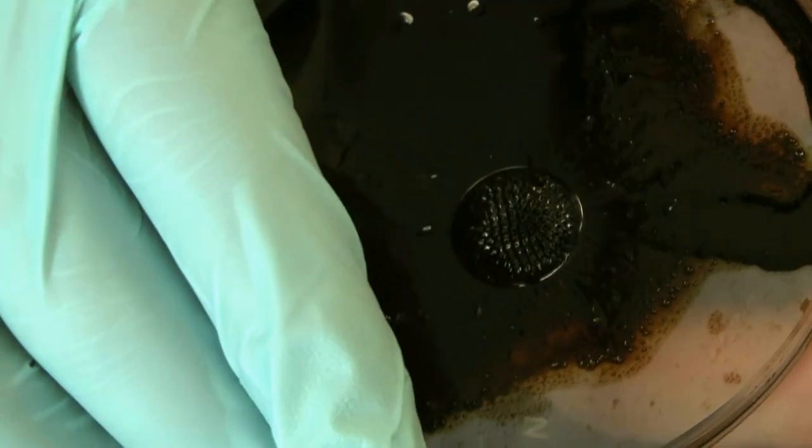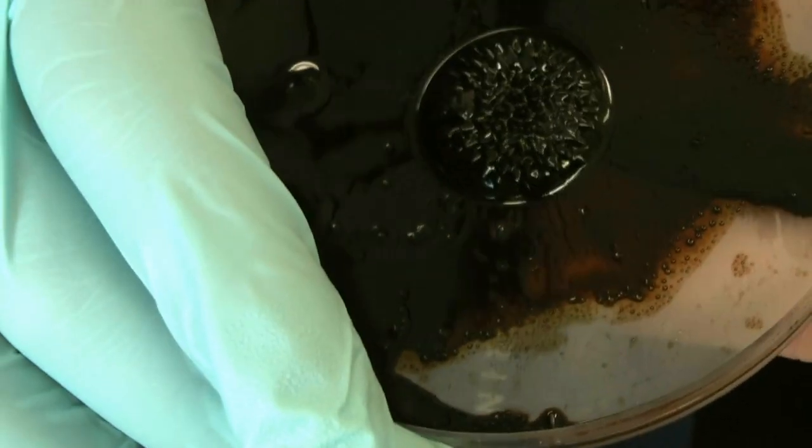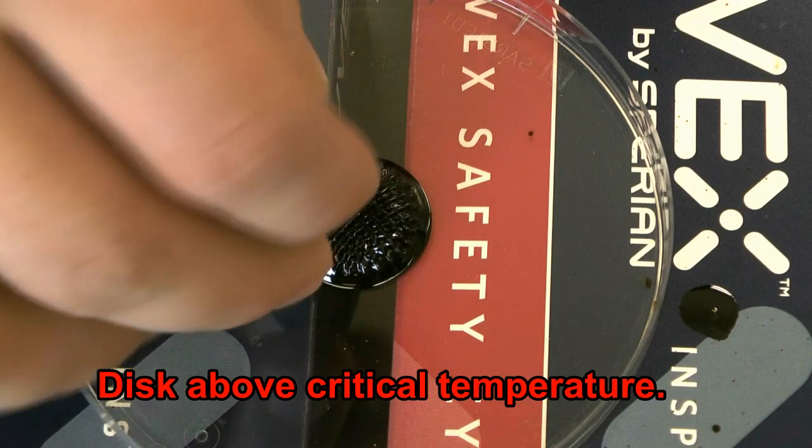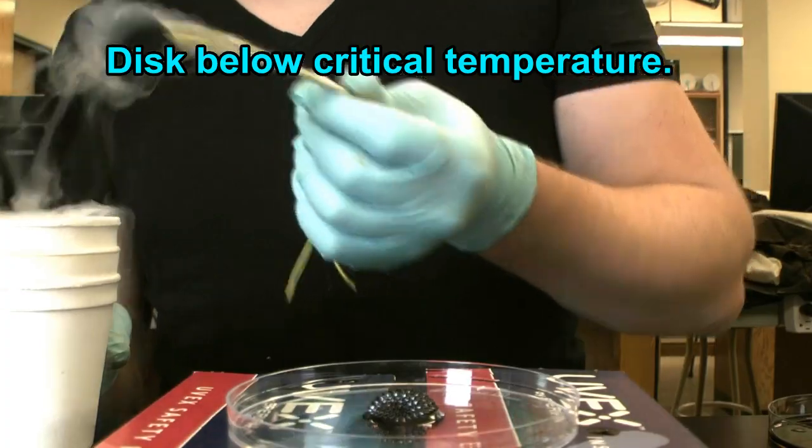Now, let's see what this will do to a ferrofluid. As you can see, the shape of the ferrofluid changes as we approach it with a magnet. The two things that control the shape are the magnetic field and the surface tension of the fluid. If we bring a warm superconductor near it, there's no change in the spikes, because it has no effect on the magnetic field.